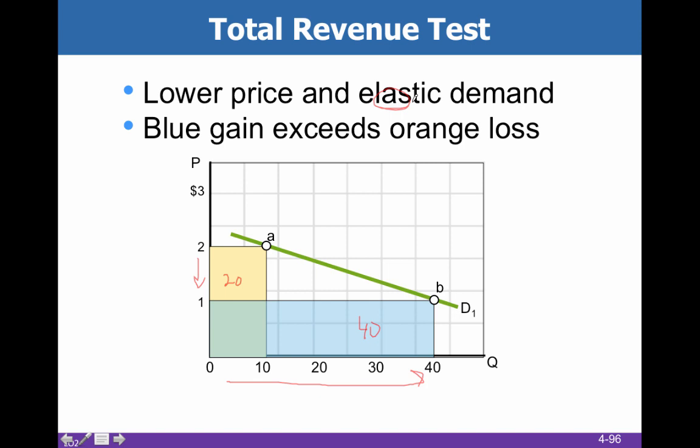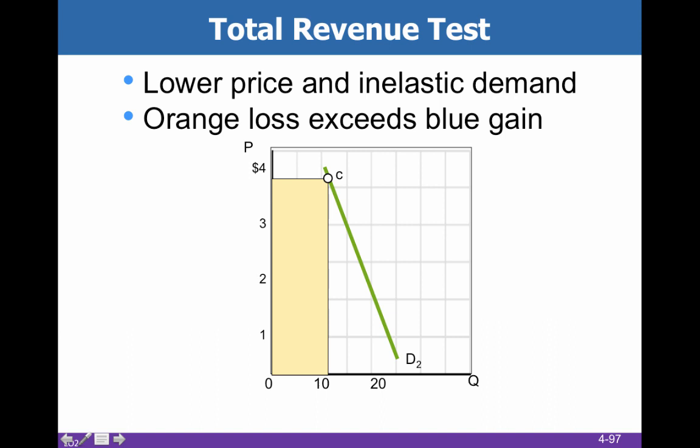On the inelastic demand side, if you lower prices from $4 to roughly $1, you sell a few more units but not enough to overcome the decrease in price. You're getting about $3 less per unit and only selling 10 more units, so now we have total revenue of $20 at the lower price when we had total revenue of $40 at the higher price. So businesses are not going to have much incentive to lower their prices. Of course, this is total revenue — without cost figures we can't say much, because businesses are interested in maximizing profit, not just revenue.